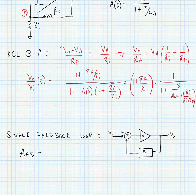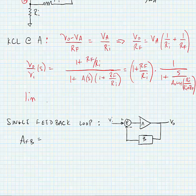Now, if we take the limit of this equation as A tends to infinity, which is what we want from our op-amp, we find the following, that the gain is just equal to 1 plus RF divided by RI. In other words, the op-amp doesn't have anything to do with the gain.